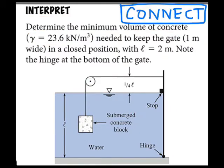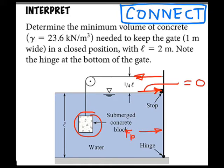Next I'll connect with what I already know. The cable will put a tension force there. The stop will push on the gate like this. However, I would expect this to be zero because I'm looking for the minimum volume of concrete of the block. The water will put a pressure force on here, so it looks like I have a statics problem involving summing moments about the hinge.